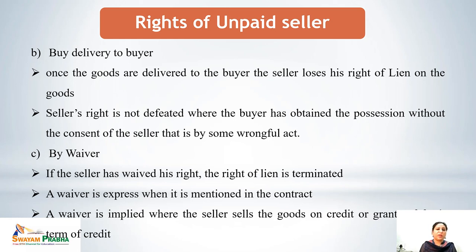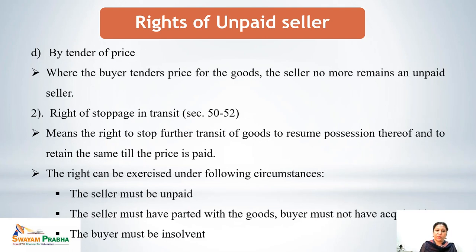A waiver is implied where the seller sells the goods on credit or grants fresh terms of credit. For example, if on the day of payment the seller gives two months more credit, granting those fresh terms means he has lost his right of lien on the goods. Fourth, by tender of price — when the buyer tenders the price for goods, the seller no longer remains an unpaid seller, and therefore cannot exercise his right of lien.